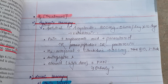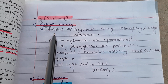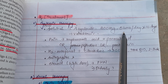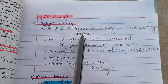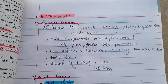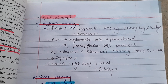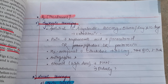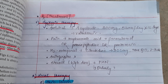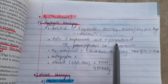Treatment includes systemic therapy, local therapy, and surgical therapy. For systemic therapy, the antiviral drug given is oral acyclovir 800 mg five times a day for 10 days, or valacyclovir. Oral antivirals reduce pain, curtail vesiculation, stop viral progression, and reduce the incidence and severity of keratitis and iritis.